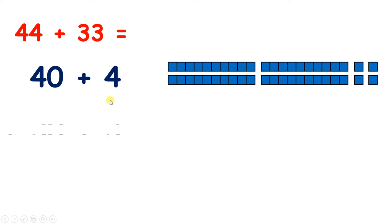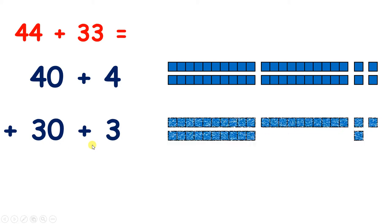And 33 can be partitioned as 30 plus 3. If we have 33, then we have 3 tens, so 30, and 3 units, so 3.